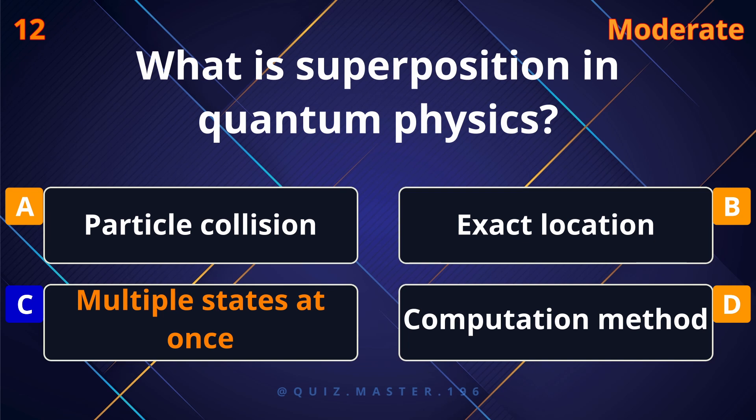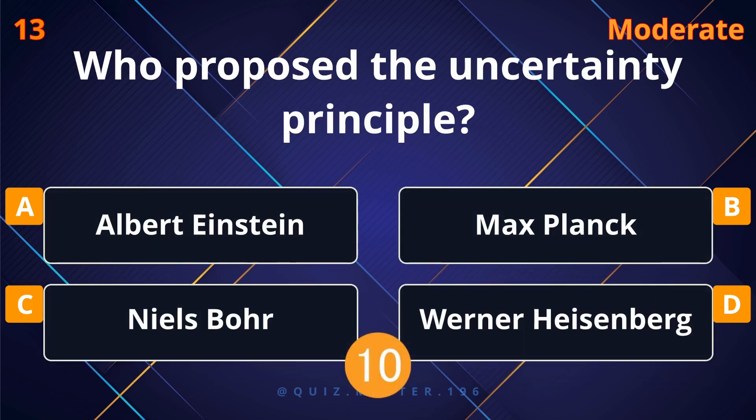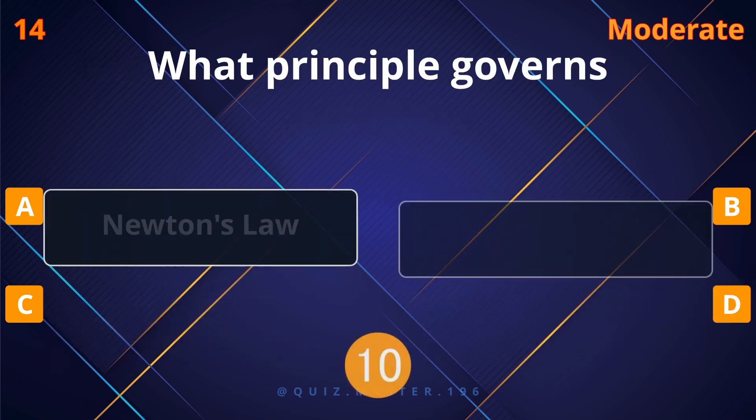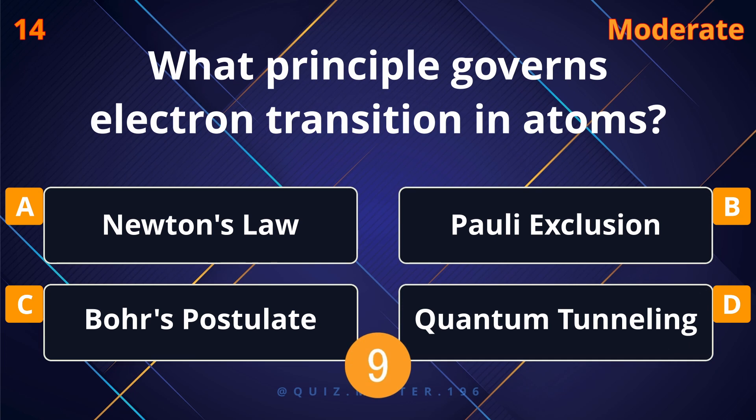What is superposition in quantum physics? Multiple states at once. Who proposed the uncertainty principle? Werner Heisenberg.